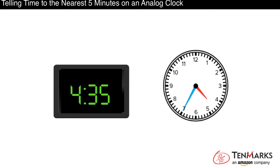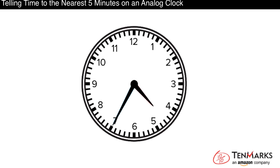Clocks are used to tell time. We need to be able to read clocks for many reasons, like getting to school or the movies on time and setting timers for cooking. Here are two different clocks. They both show the same time, 4:35. Let's find out how to read this time on an analog or face clock.